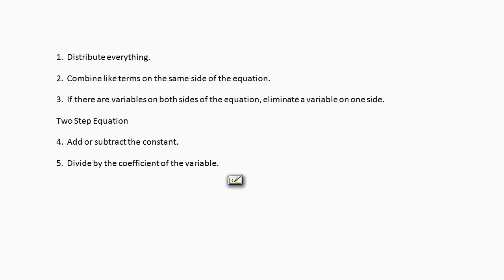At this point, you're at a two-step equation, so step 4 is to add or subtract the constant, and step 5 is to divide by the coefficient of the variable.